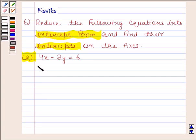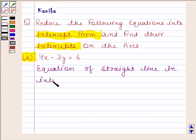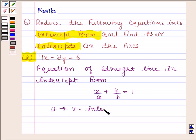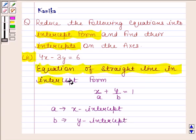Before solving this question, we should know that the equation of a straight line in intercept form is given by x by a plus y by b equals 1, where a is the x-intercept and b is the y-intercept. Always remember this form.